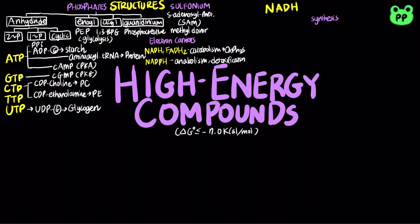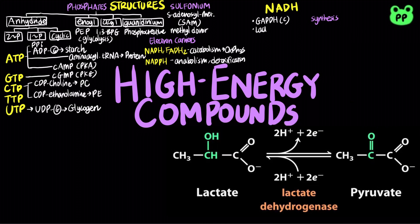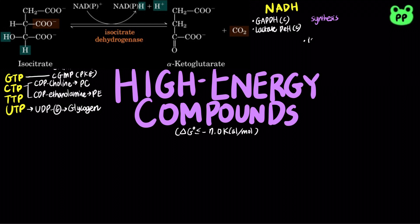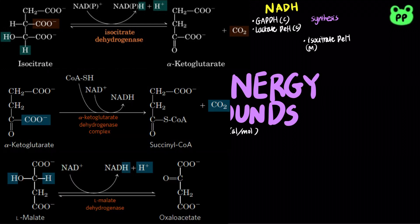Catabolic pathways that synthesize NADH are catalyzed by NAD-dependent dehydrogenases, including glyceraldehyde-3-phosphate dehydrogenase from glycolysis, which occurs in the cytosol, lactate dehydrogenase, which also occurs in the cytosol, isocitrate dehydrogenase, alpha-ketoglutarate dehydrogenase, and malate dehydrogenase from the citric acid cycle occurs in mitochondria.